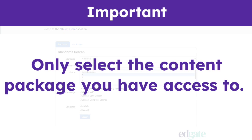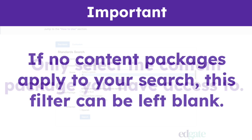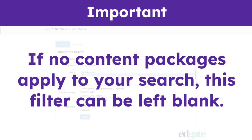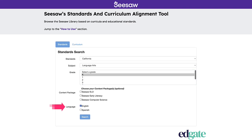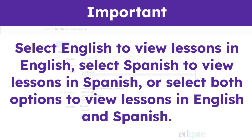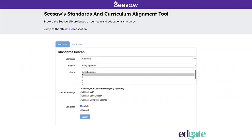Only select the content package you have access to. If no content packages apply to your search, this filter can be left blank. Then, select the language of the content you would like to see in the results: English, Spanish, or both options to view lessons in English and Spanish. Once your selections have been made, click Search and get ready to be amazed.